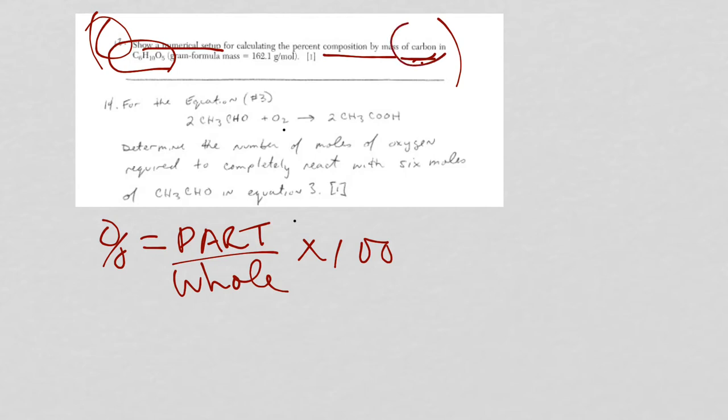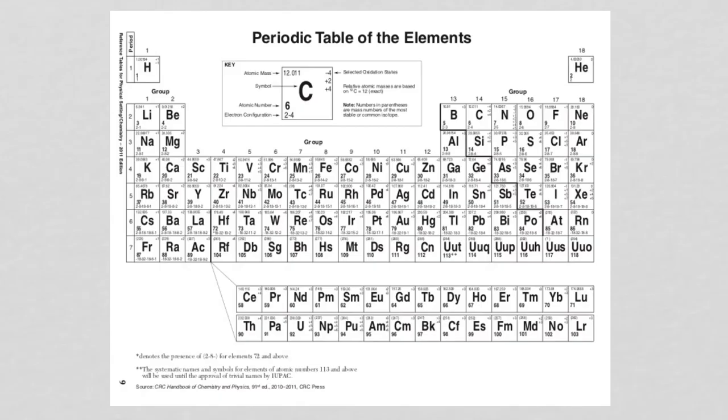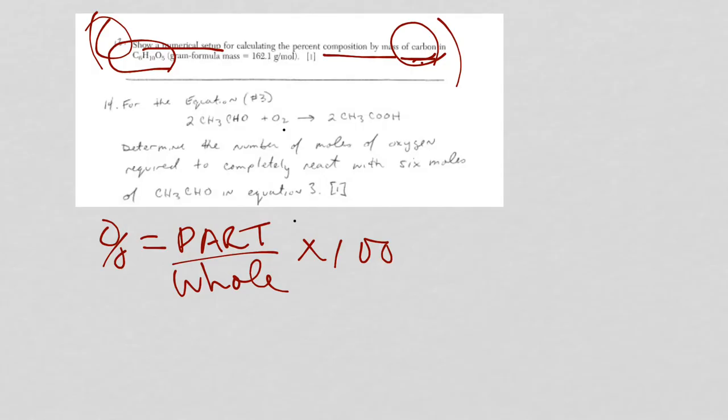What's the part? The part is the carbon. You go to the periodic table, and here is carbon's mass. Carbon's mass is 12.12, but I'm not going to just put 12 in. Notice, it's 6 carbons in the formula.